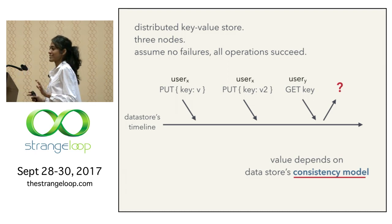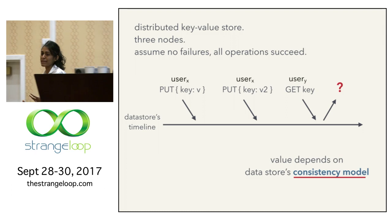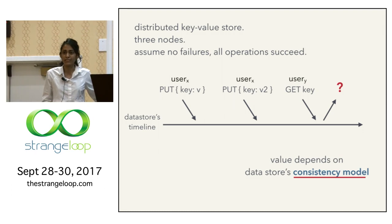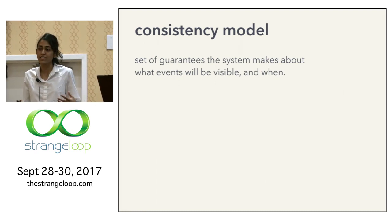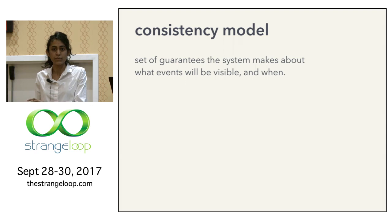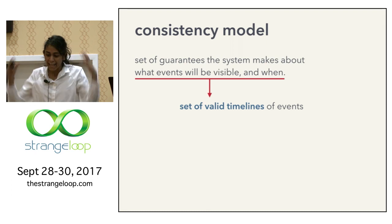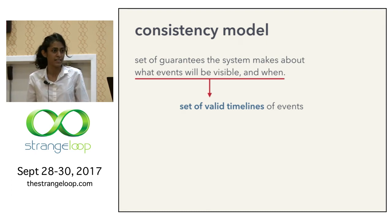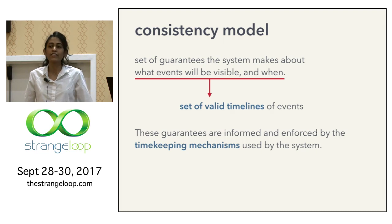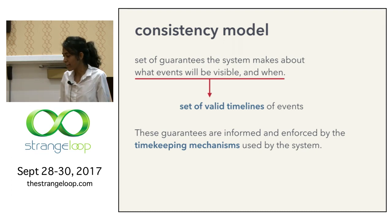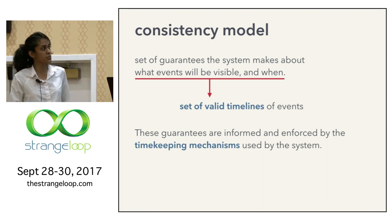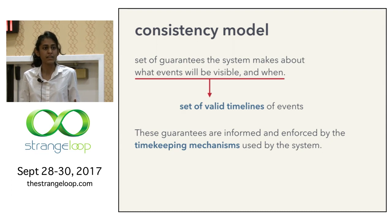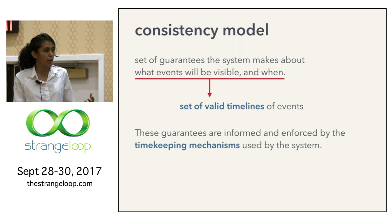But wait — this talk was supposed to be about time and timekeeping. Why are we talking about consistency models? Well, a consistency model can be thought of as the set of guarantees the system provides about what events are visible and when. So it's about time in that the consistency model encapsulates the set of valid timelines for events in our system. And these guarantees are informed by and enforced by the timekeeping mechanisms the system uses.